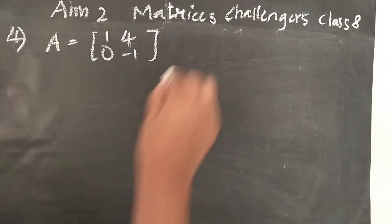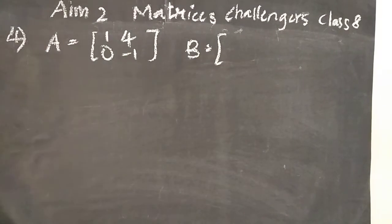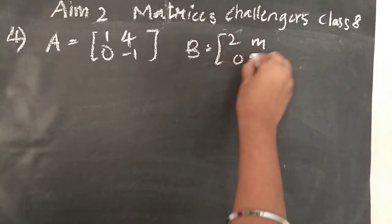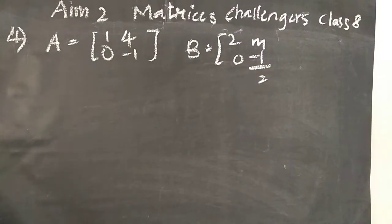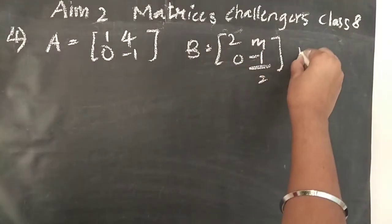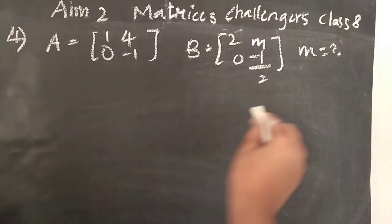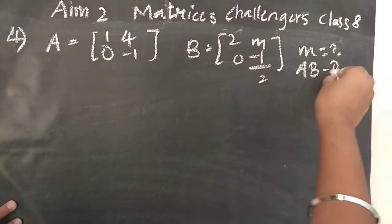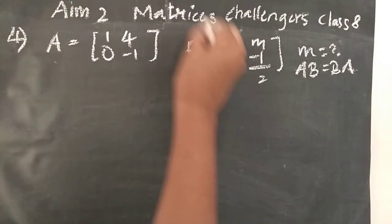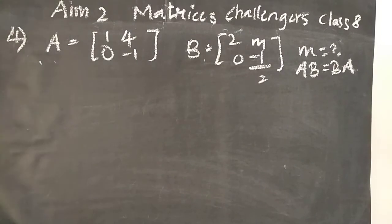And they gave B matrix also, B equal to 2M, 0, minus half. Now here we have to find the value of M. This is not an equal matrix, they didn't mention that. When you see the numbers, all are different, so you can't say it is an equal matrix. So what is the criterion? It is given as AB is equal to BA.